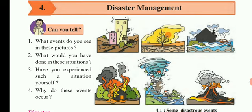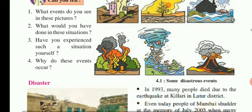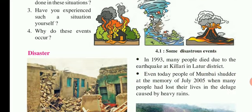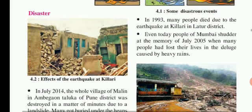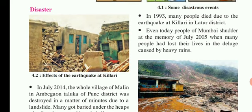The social impacts of nature on our society — this is called a disaster. In 1993, many people died due to the earthquake at Killari in Latur district. Even today, people of Mumbai shudder at the memory of July 2005, when many people lost their lives in the disaster caused by heavy rain.